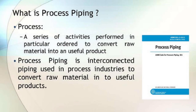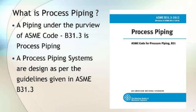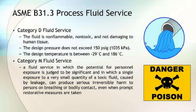Now let's know about what is Process Piping. A process is a series of activities performed in a particular order to convert raw material into a useful product. Process piping is interconnected piping used in process industries to convert raw material into useful products. Piping under the purview of ASME Code B31.3 is known as Process Piping, and process piping systems are designed as per the guidelines given in ASME B31.3.